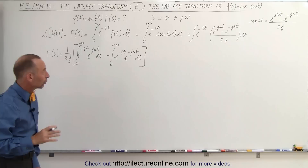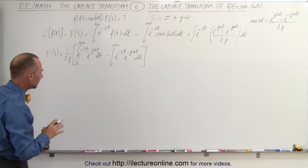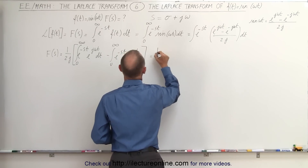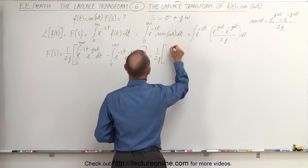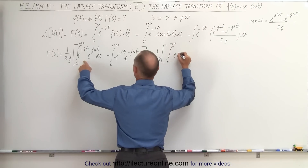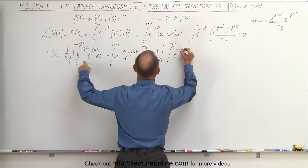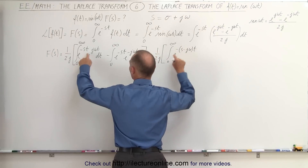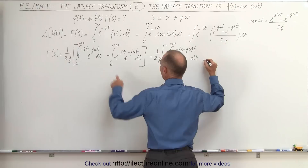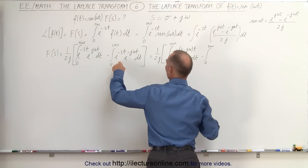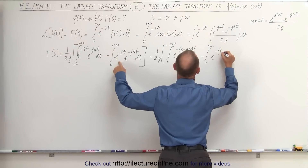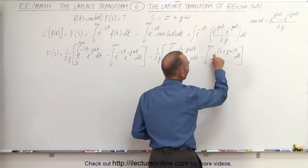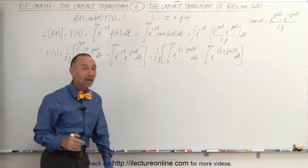We'll go ahead and integrate both of those separately, but first let's write them in a more compact form. This can be written as 1 over 2j times the integral from 0 to infinity of e to the minus quantity s minus j omega, times t dt, minus the integral from 0 to infinity of e to the minus quantity s plus j omega, times t dt. Notice that when you apply the negative sign, you get back what you started with.